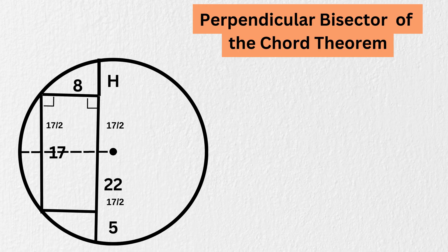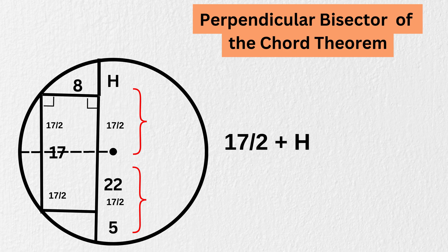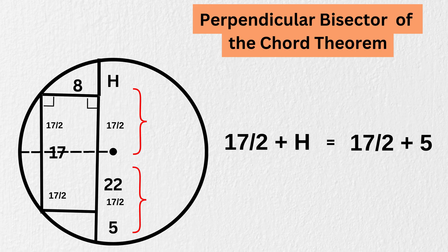Similarly, this will also be 17 divided by 2. Right now, again using the perpendicular bisector of a chord theorem on this chord, both these pieces will be of equal length. Therefore, we get 17 divided by 2 plus H will be equal to 17 divided by 2 plus 5, so we get H equals 5.